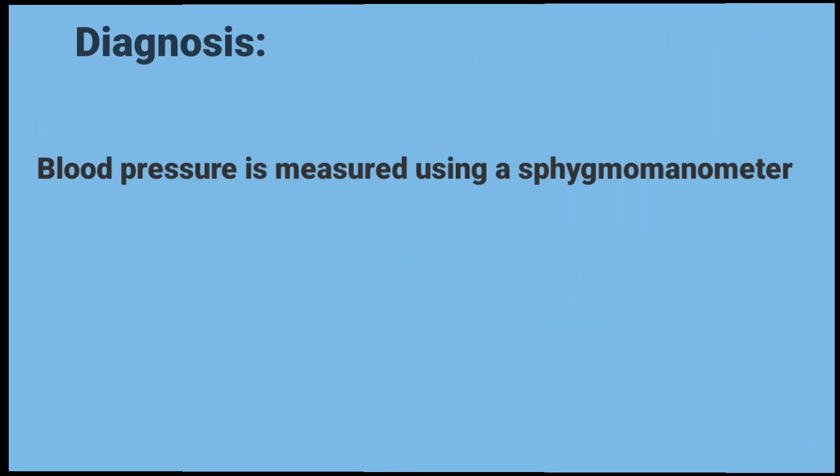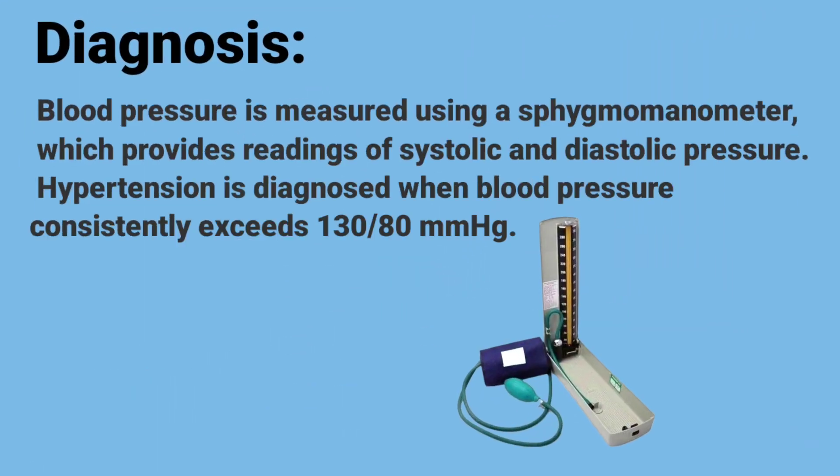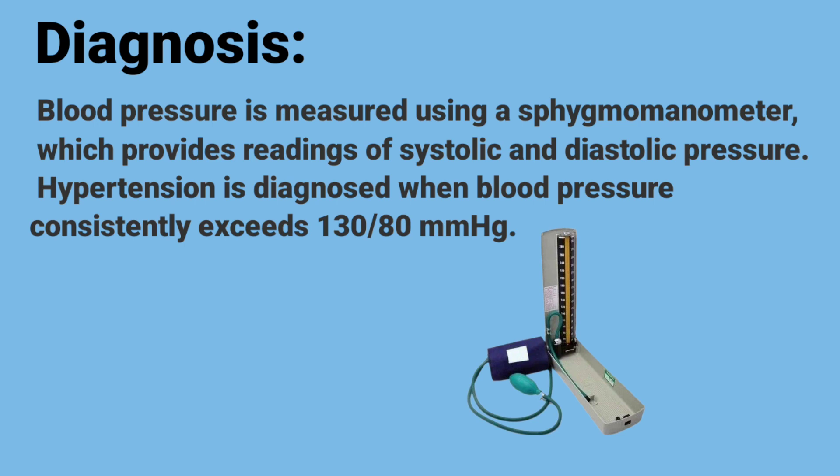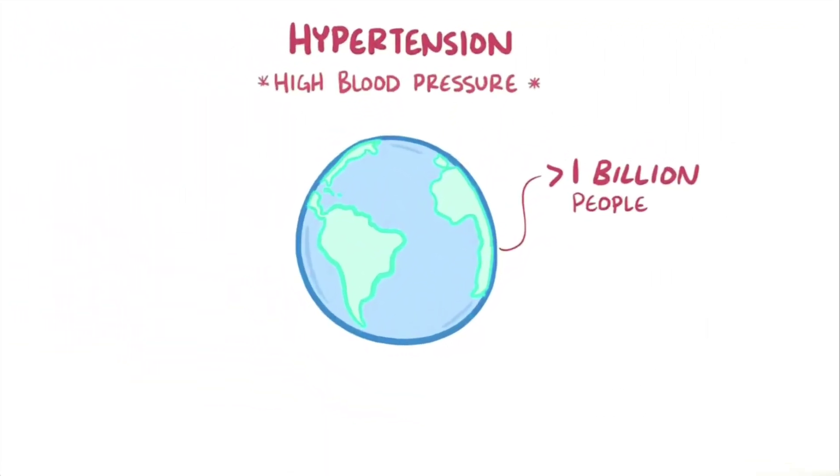Complications include heart disease such as heart attacks and heart failure, stroke, kidney disease, vision problems, peripheral artery disease, and cognitive decline. Blood pressure is measured using a sphygmomanometer, and hypertension is diagnosed when blood pressure consistently exceeds 130/80 millimeters of mercury.